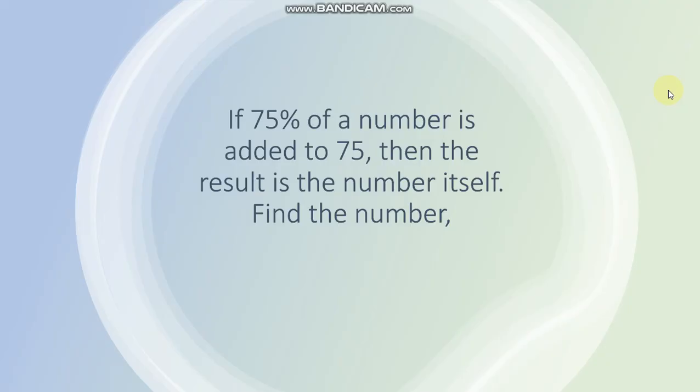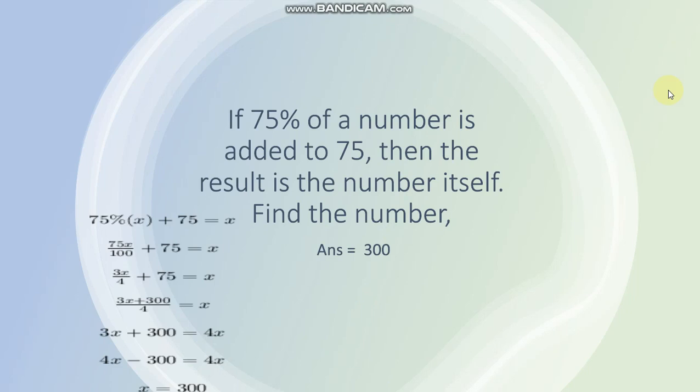Now, next question is if 75 percent of a number is added to 75, then the result is the number itself. Find the number. Answer is 300. How you will calculate 75 percent of a number? Let number be X. So 75 percent of X: 75 upon 100 multiply by X plus 75 is equal to X. From this equation, you will get X is equal to 300.